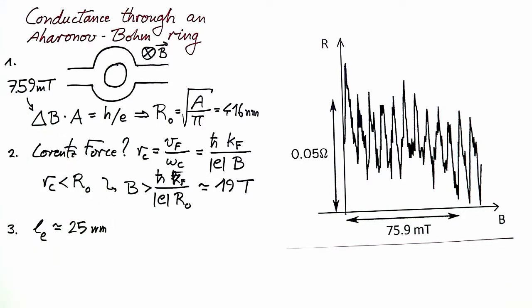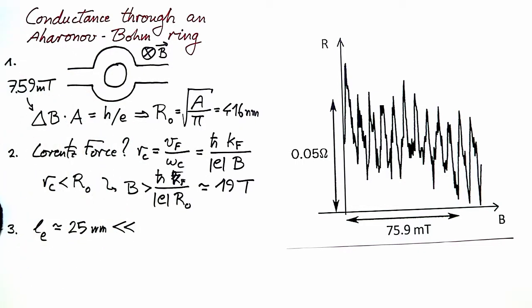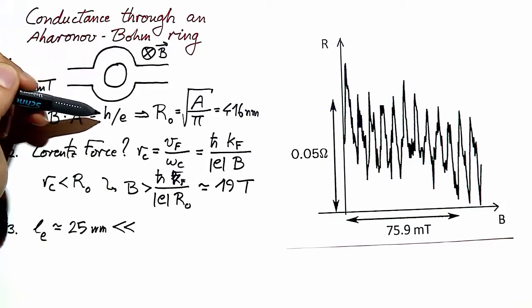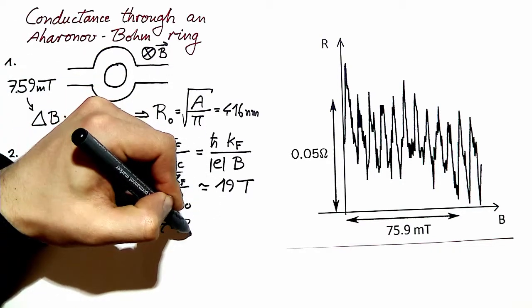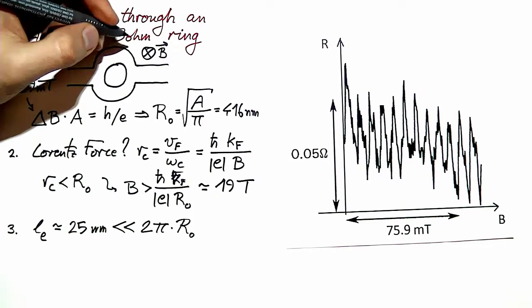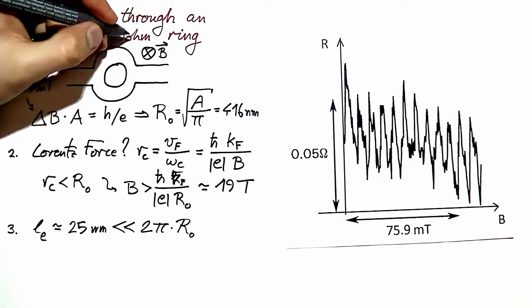The elastic mean free path is of the order of 25 nanometers. This is the mean distance traveled by electrons between two elastic scattering events. Those 25 nanometers are much smaller than the dimension of the ring, for example 2π times radius.